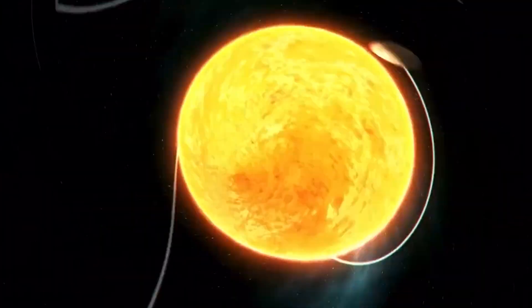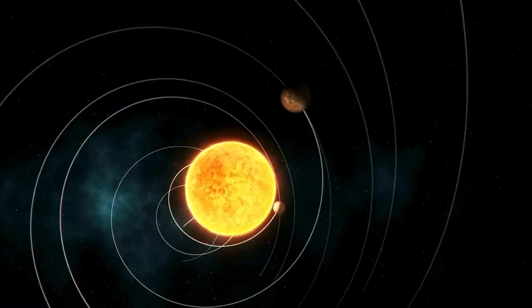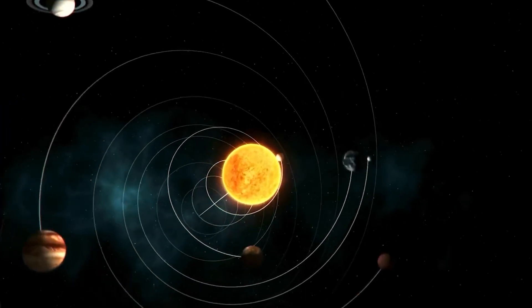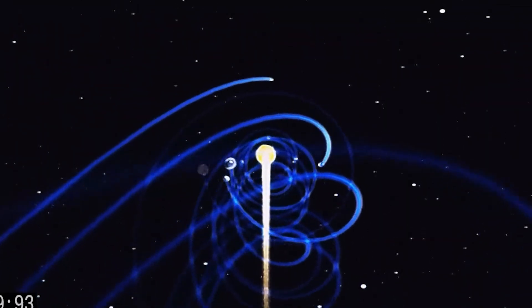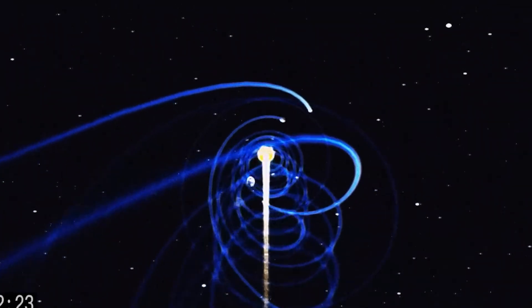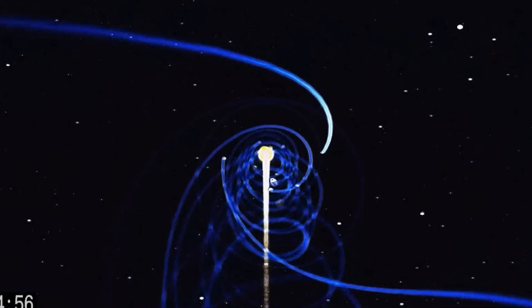When we broaden our view, we realize that the Earth isn't just a planet orbiting a star. It's part of an entire solar system that never stops, traveling around the Sun at an absurd speed, something close to 107,000 kilometers per hour. And that's not all.